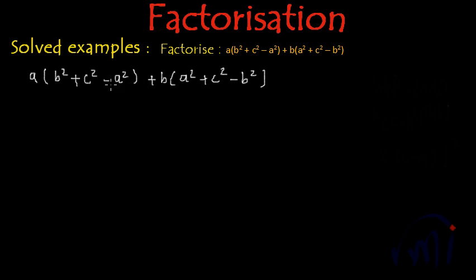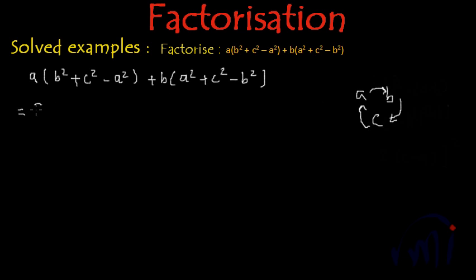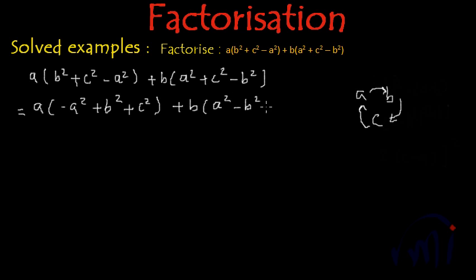The first thing I'll do is arrange these brackets in cyclic form. Cyclic form means A, B, C — after A comes B, after B comes C, and after C comes A. So this can be written as A multiplied by minus A squared plus B squared plus C squared, plus B multiplied by A squared minus B squared plus C squared.